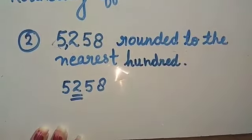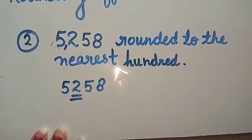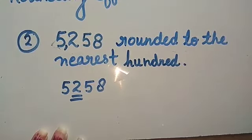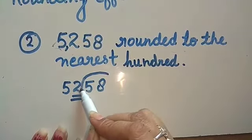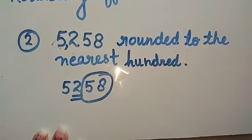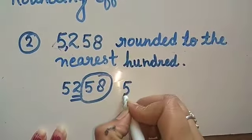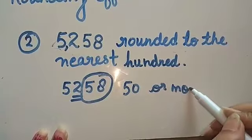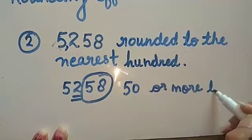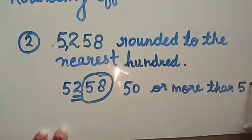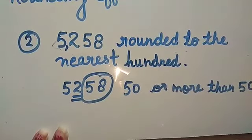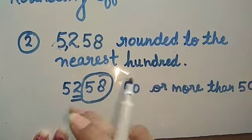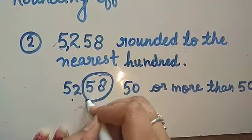In the hundreds place, the digit 2 is given. Now, check the number formed by the digits just on the right of the place to be rounded off. If this number is 50 or more than 50, then the number is rounded off to the next hundred.